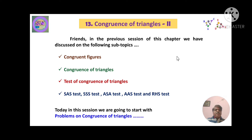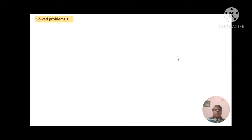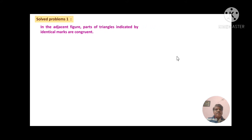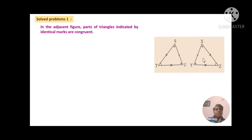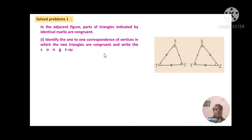Today in this session we are going to start with the problems on congruence of triangles. Let us see a few solved problems first. In the adjacent figure, parts of the triangles indicated by identical marks are congruent. We can see two triangles given in the adjoining figure and their congruent parts are shown with identical marks — for example, segment SU and XY are shown with the same identical mark. Identify the one-to-one correspondence of the vertices in which the two triangles are congruent and write the congruence in two ways.